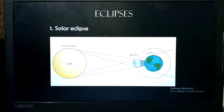A solar eclipse occurs in the daytime at new moon when the moon is between the earth and the sun.